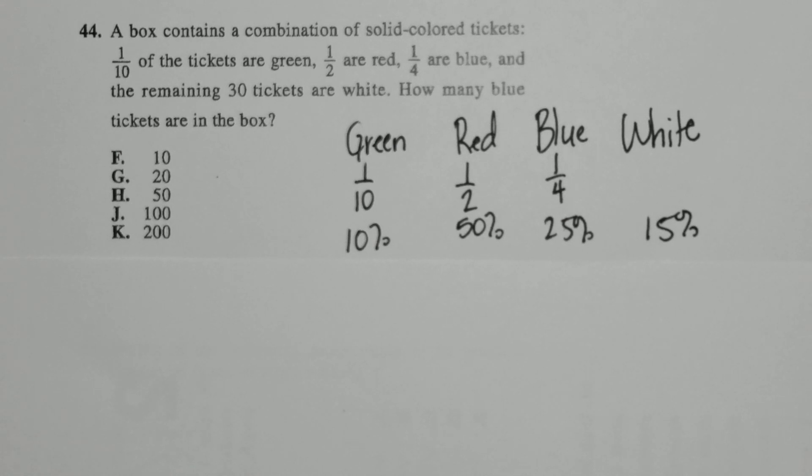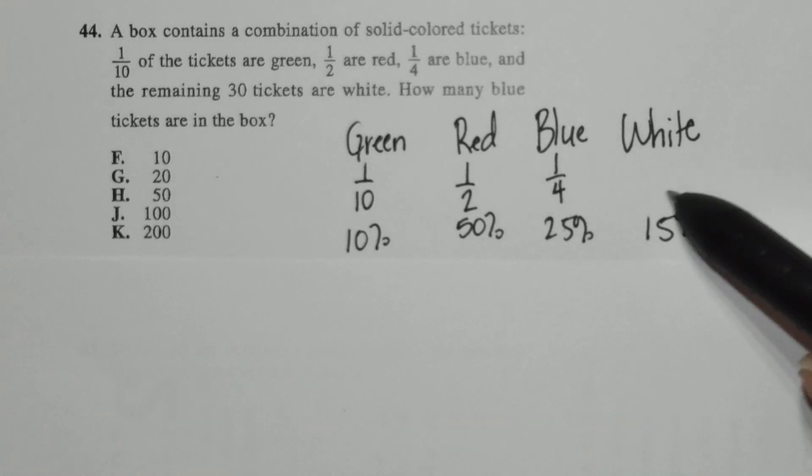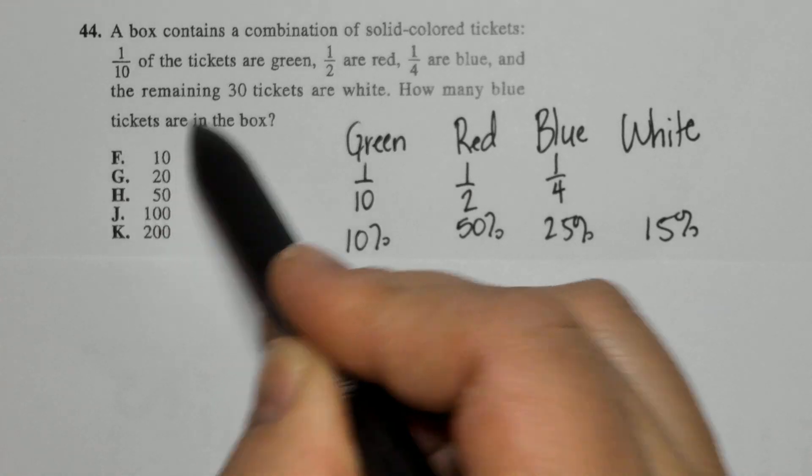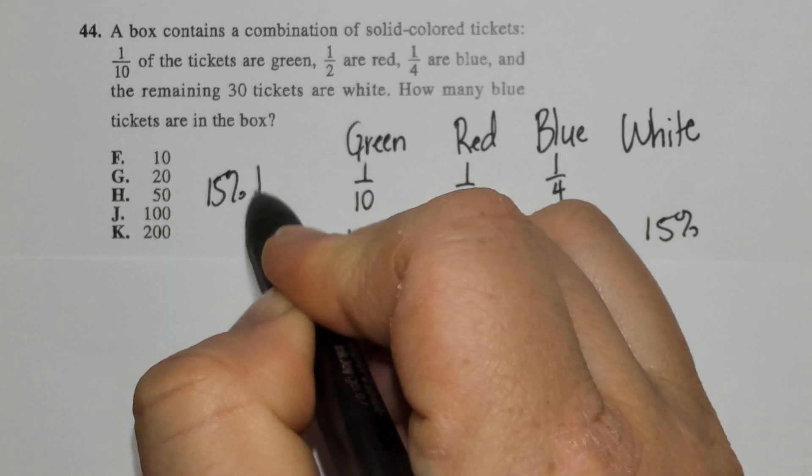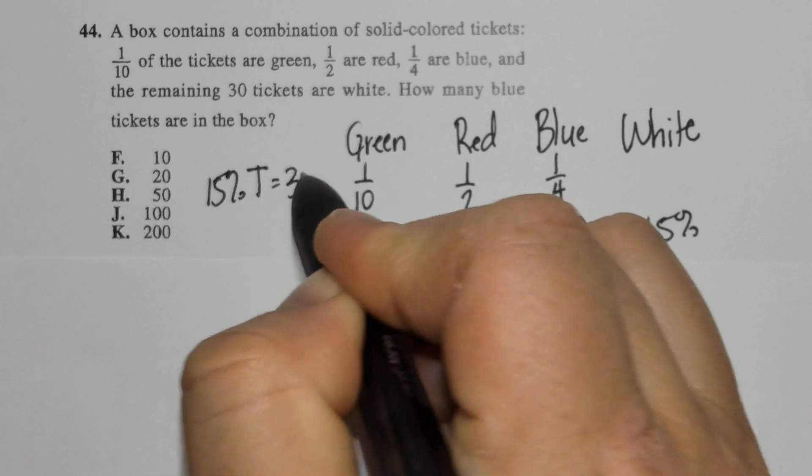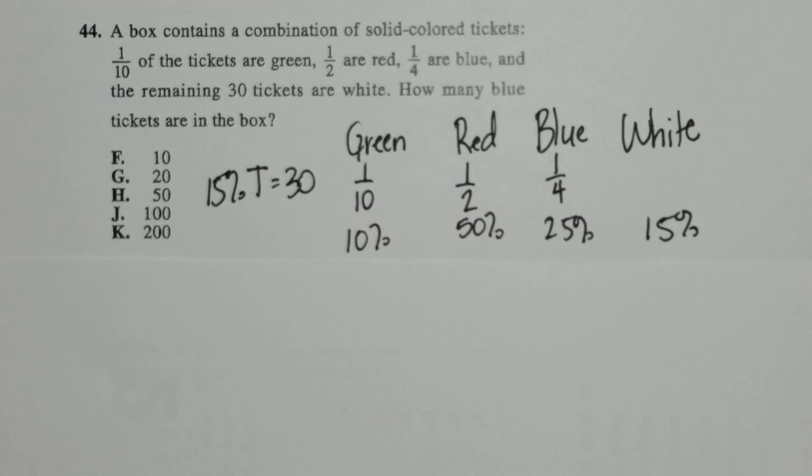It also tells us there are a total of 30 tickets that are white. So I know 15% of the total are white, and I have a total of 30. So 15% of the total tickets equals 30 tickets.